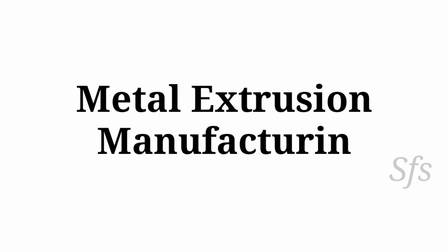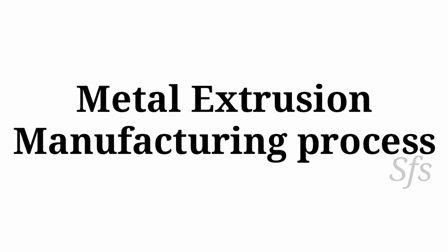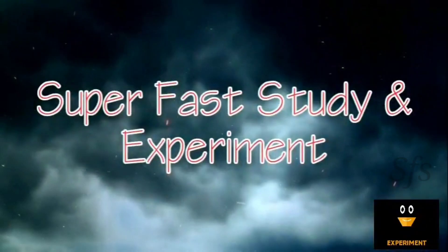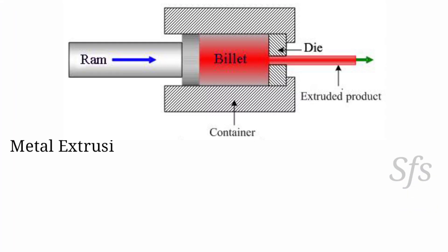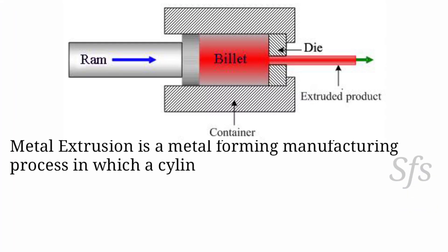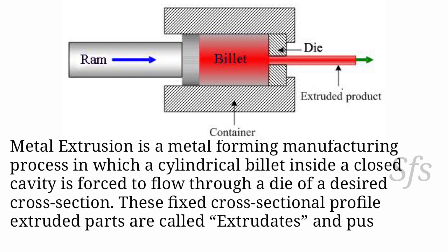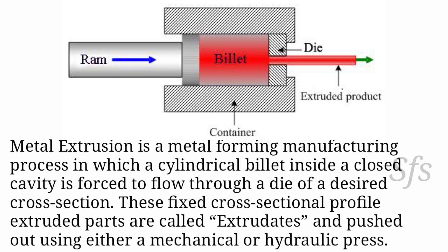Metal extrusion is a metal forming manufacturing process in which a cylindrical billet inside a closed cavity is forced to flow through a die of a desired cross section. These fixed cross section profile extruded parts are called extrudates and are pushed out using either a mechanical or hydraulic press.